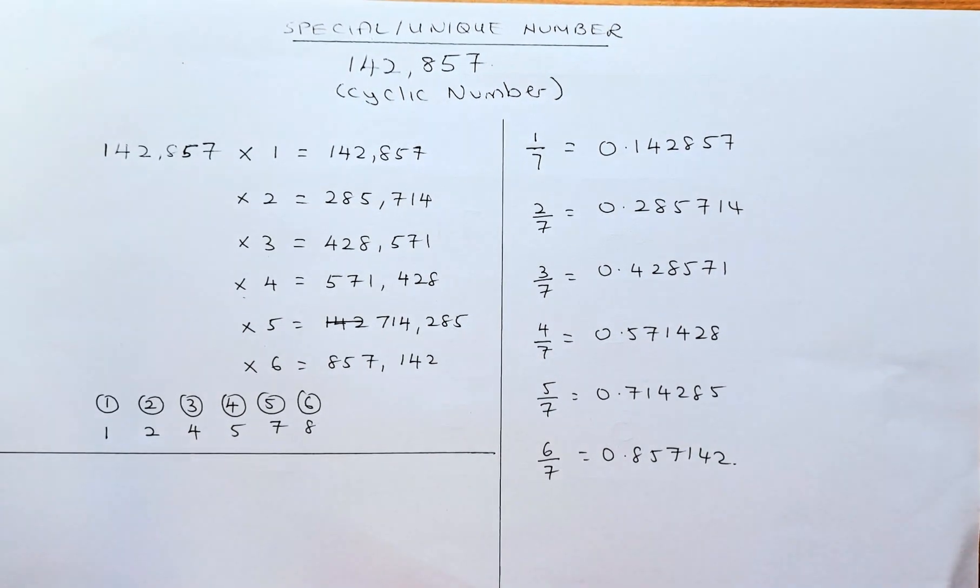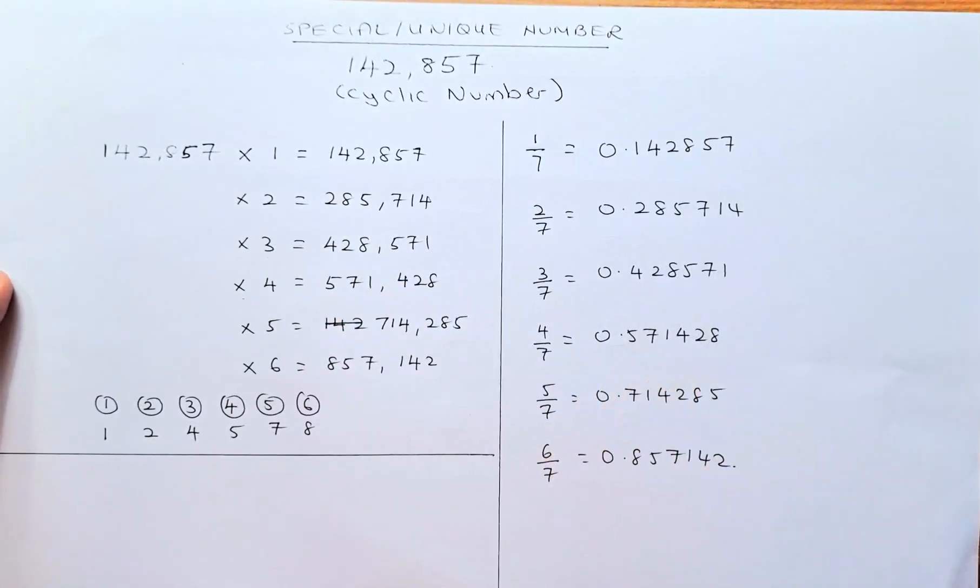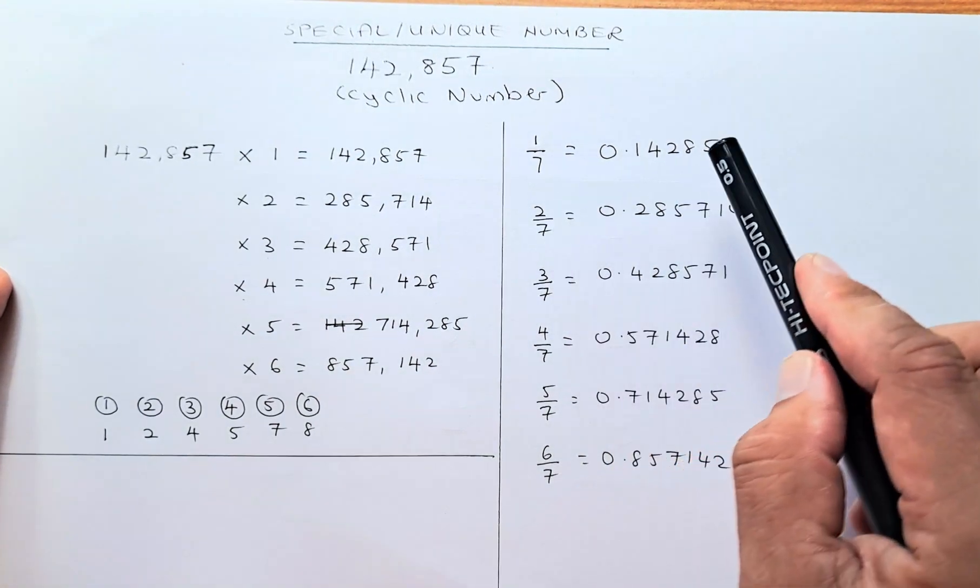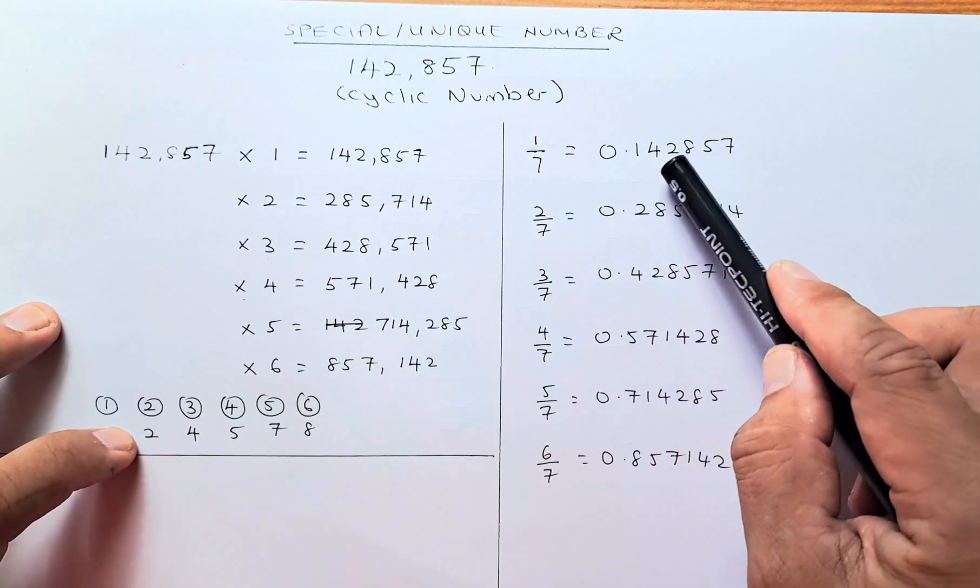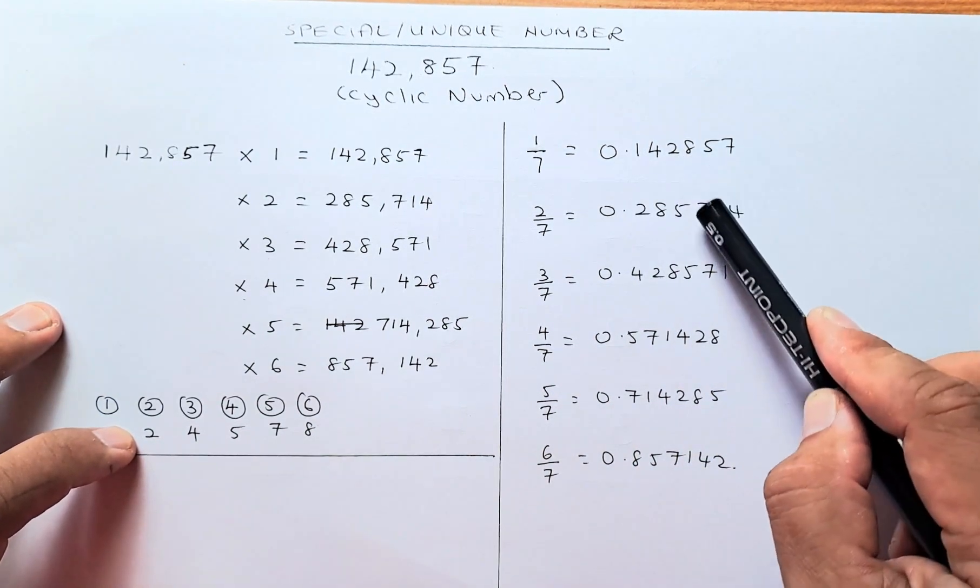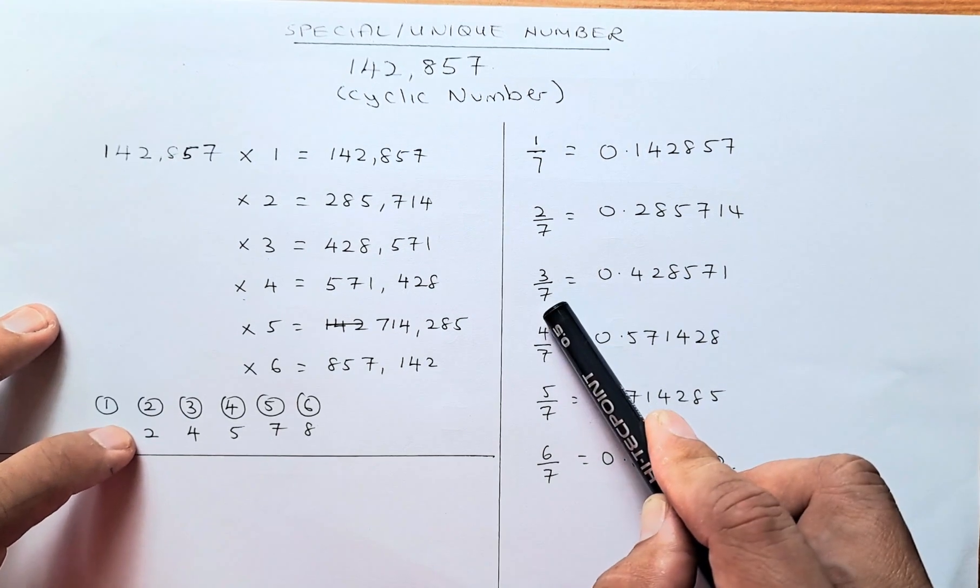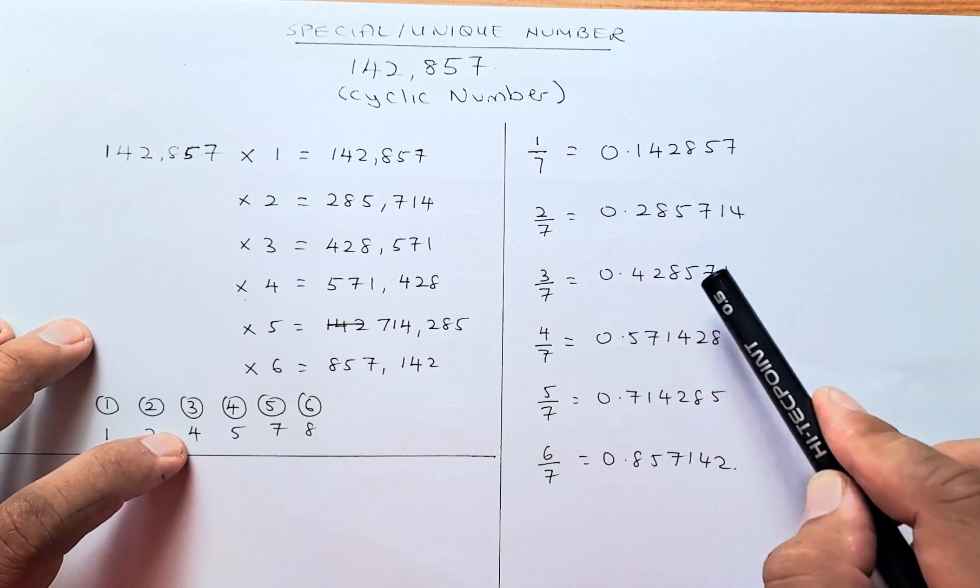This pattern also occurs in a fraction of 7. So if you take 1/7, the answer is going to be that number, 0.142857. And if you get 2/7, you look for the 2, second number. The second biggest number is 2, so it starts at 2, so it will be 2857, and the cycle 14. And 3/7 is going to be the third biggest number. It starts at 4, so 4, 28571.